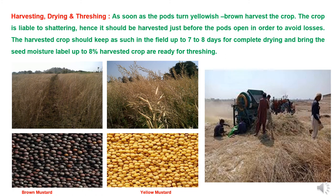For harvesting, drying, and threshing: the harvesting stage is very important in mustard as it is prone to shattering. As soon as the pods turn yellowish-brown in color, harvest the crop. It should be harvested just before the pods open to avoid losses. The harvested crop should be kept in the field for seven to eight days for complete drying, bringing moisture down to 8%, after which threshing should be done.